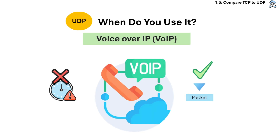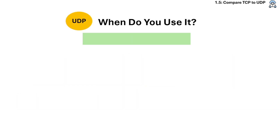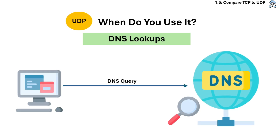UDP is used for Voice over IP — dropping a few packets won't ruin a call, but delays will. It's also used for video streaming, where buffering handles some packet loss but speed is more important. It's used for online games, where fast updates are crucial but missing one isn't as bad as a delay. And it's also used for DNS lookups.